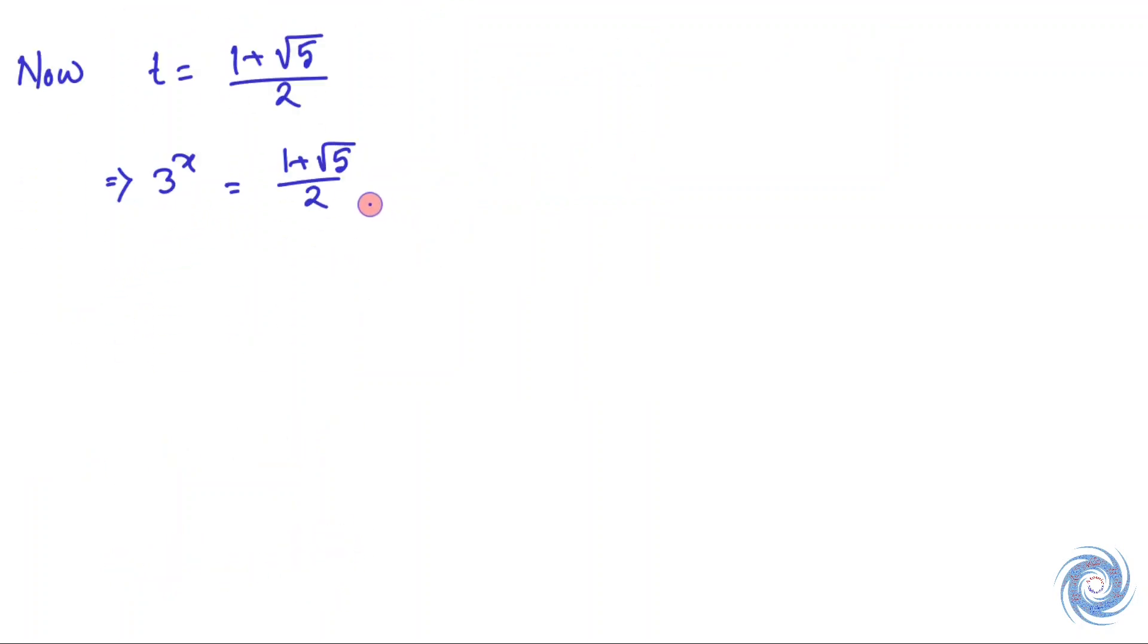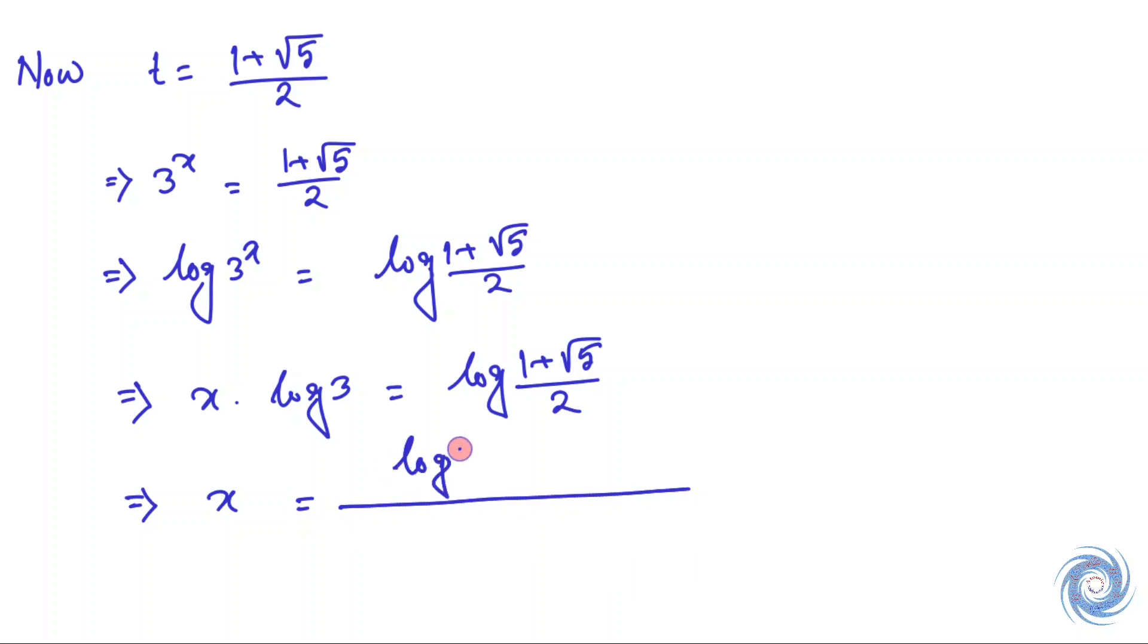From here we get 3 to the power x equals one plus square root of 5 over 2. Let us apply logarithm on both sides. So we have x equals log of one plus square root of 5 over 2, whole divided by log 3.